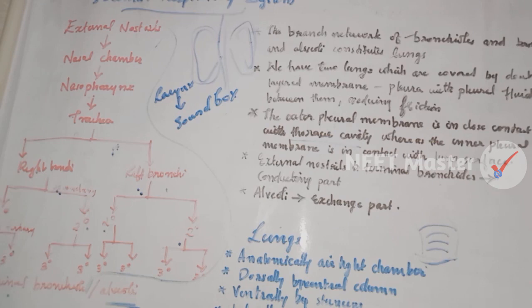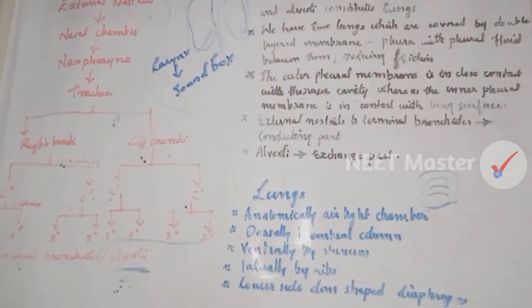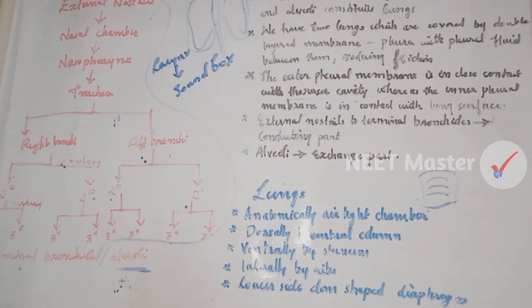The external nostrils to terminal bronchioles form the conducting part, while alveoli are the exchange zone. The lungs are enclosed in an airtight thoracic chamber bounded by the vertebral column, sternum, lateral ribs, and dome-shaped diaphragm. This is the human respiratory system. Thank you.